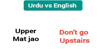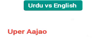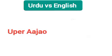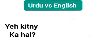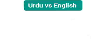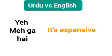Upar mat jau — don't go upstairs. Upar ajao — come upstairs. Ye kitne ka hai — how much is this? Ye mehka hai — it's expensive.